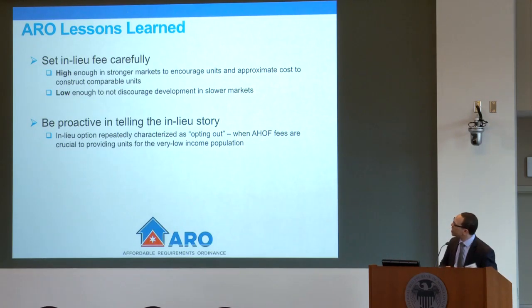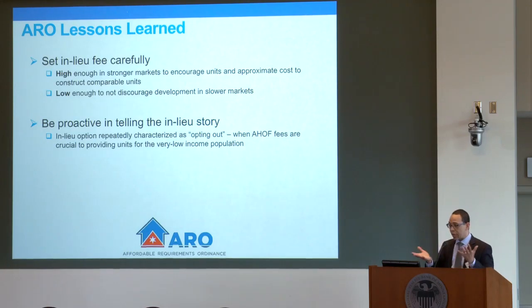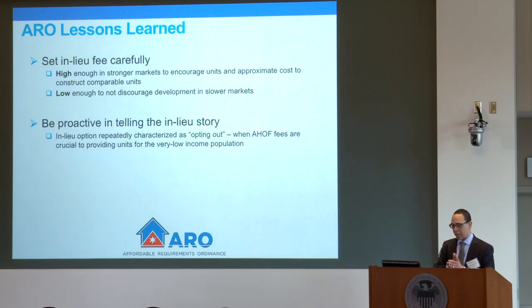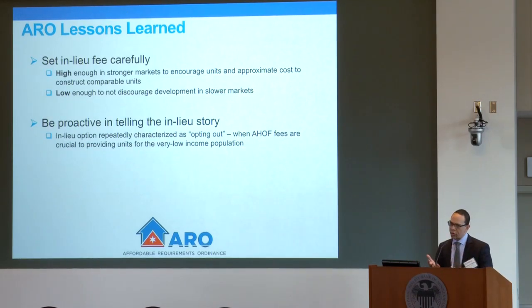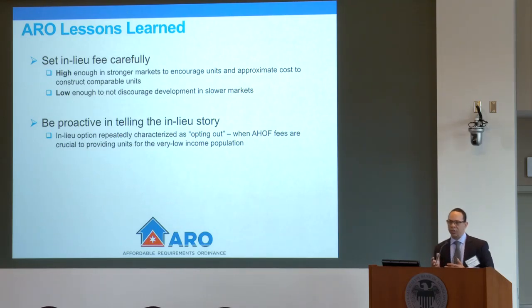One issue is the characterization of the in-lieu fee. The in-lieu fee is often described as developers opting out, and it's difficult to explain that the way our inclusionary zoning ordinance is set up, the affordability obligation has three different ways to be fulfilled: paying fees, building units on-site, or building units off-site. They all produce affordable units in one fashion or another. But people often see paying the in-lieu fee as developers getting out of their obligations, so being able to message that correctly is very important.